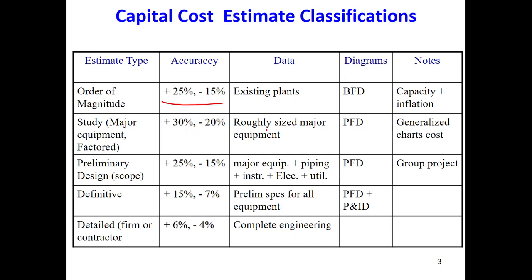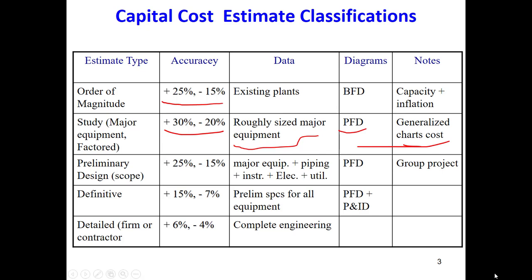We can also go into a bit more detail by using the PFD, process flow diagram, and doing some sizing for the major equipment — reactors, distillation columns, and other major equipment. We just roughly size them; we don't need exact sizing. This can give us accuracy between minus 20 to plus 30 percent of the final actual capital investment. For this we use some generalized chart costs that we will talk about later in this unit.